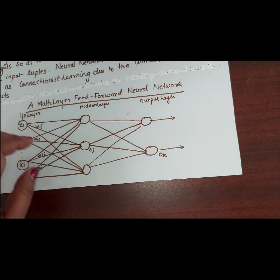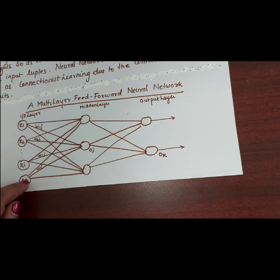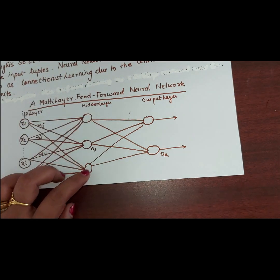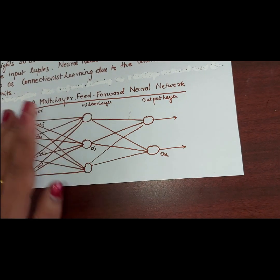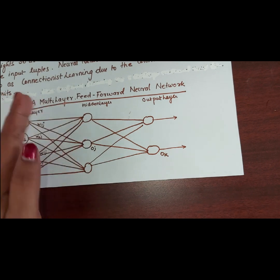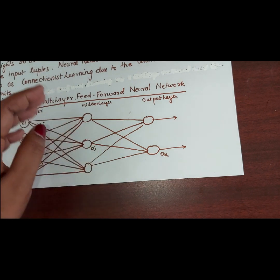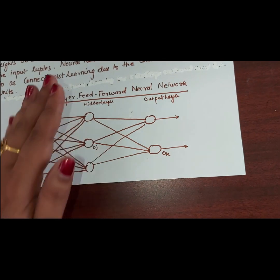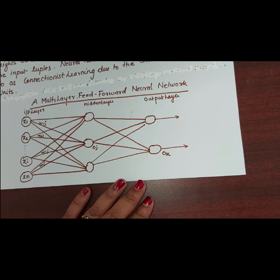The units of the input layer are called input units. The units of the hidden layer are called neuroids, which resemble biological neurons. We take the same concept as neuroids.